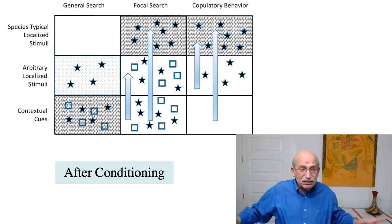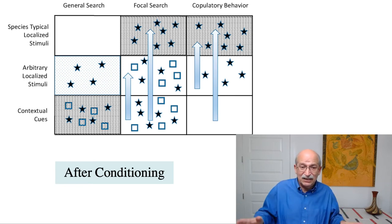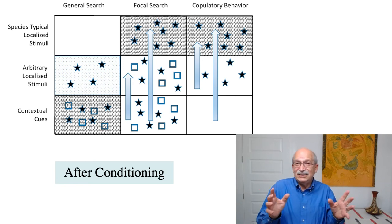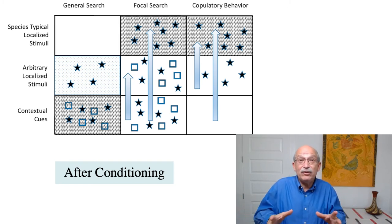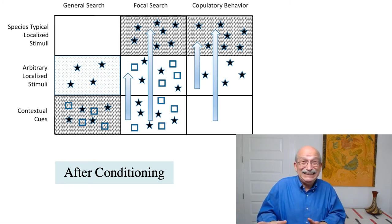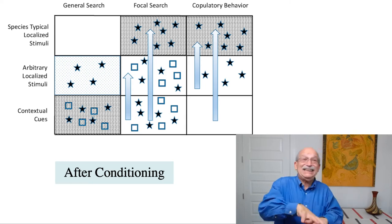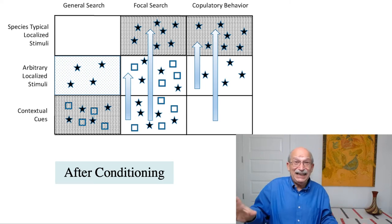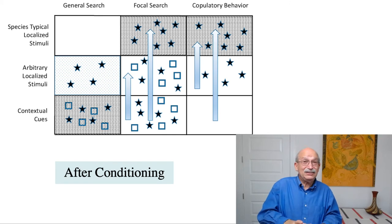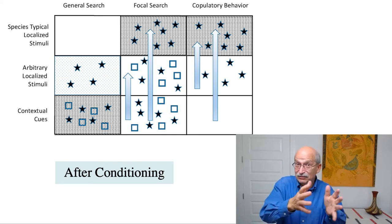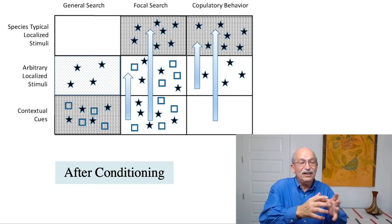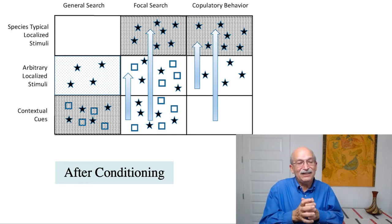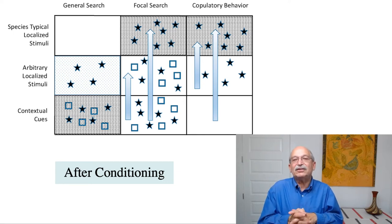So there are lots of different kinds of conditioning effects. Sexual conditioning is not only possible, but it occurs under a wide range of circumstances. And it substantially modifies the entire sexual behavior system, modifying all the different response components — general search, focal search, and copulatory behavior — and includes all these modulatory influences.